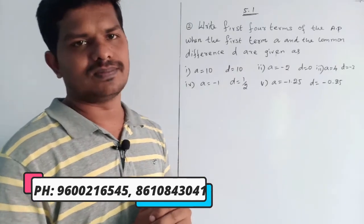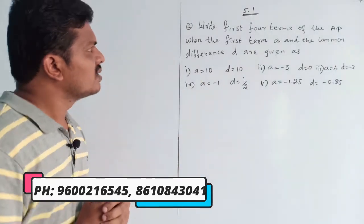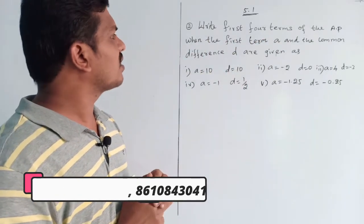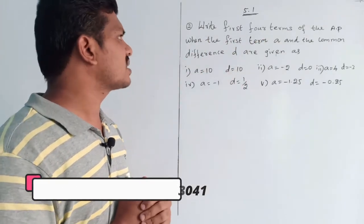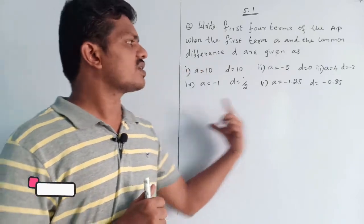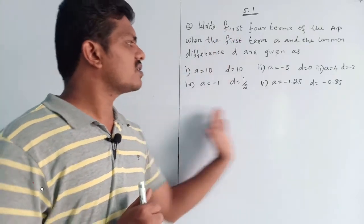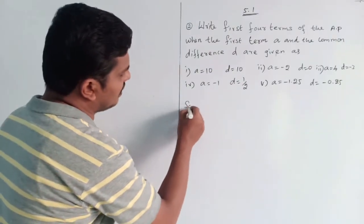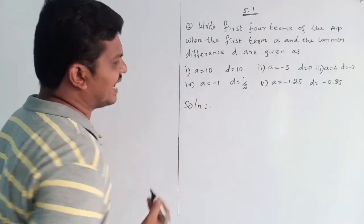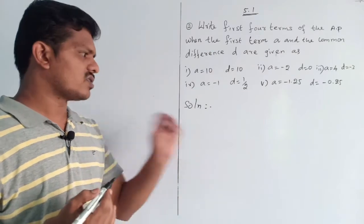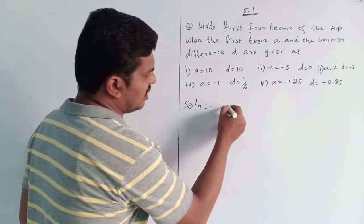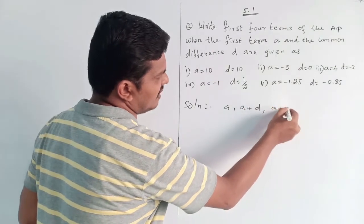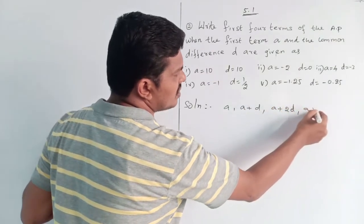We are going to write the four terms of an AP when the first term 'a' and the common difference 'd' are given. The general form of an AP sequence has the direct terms: a, a plus d, a plus 2d, and a plus 3d.